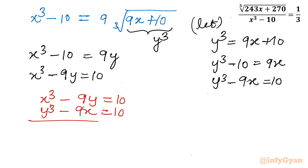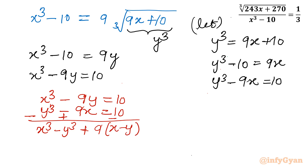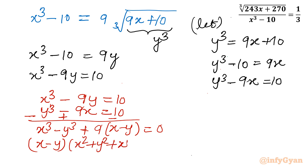I will subtract the second equation from the first. So changing signs: x³ - y³ minus 9 times (x - y) equals 0. I take 9 common in the bracket: x³ - y³ - 9(x - y) = 0. Applying the algebraic identity a³ - b³, I write (x - y)(x² + y² + xy) plus 9(x - y) = 0.